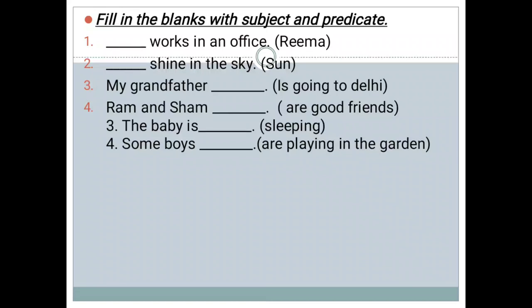Moving towards the first sentence: dash works in an office — Rima works in an office. You can write any other name, but the spelling and concept should be clear. Second: the dash shines in the sky — the sun shines in the sky. Third: my grandfather dash — my grandfather is going to Delhi. Fourth: Ram and Sham dash — Ram and Sham are good friends, or best friends, or classmates.